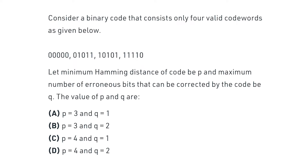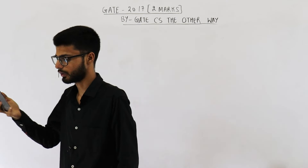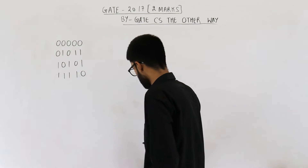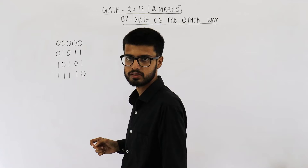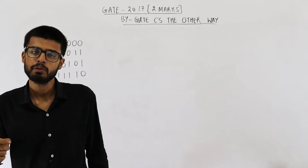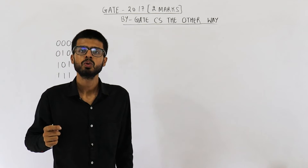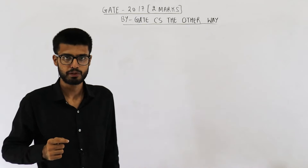You can have a look at these four code words. Let the minimum Hamming distance of the code be P, and the maximum number of erroneous bits that can be corrected by the code be Q. Then the values of P and Q are — okay, so we need to find out the minimum Hamming distance. For finding out minimum Hamming distance, we need to know the Hamming distance between each and every pair.